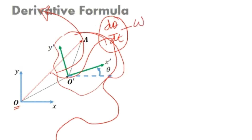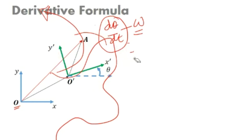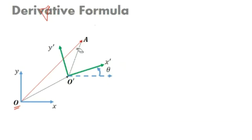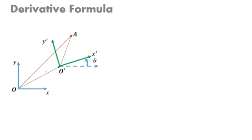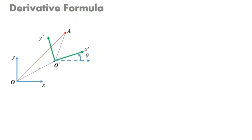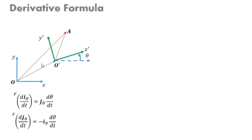If d theta by dt is present, omega is present. The displacement A is changing. If the body is not moving in a straight line, it will have both angular velocity and linear velocity. If any body moves in a curved path, it will have angular velocity, and it may also have angular acceleration if velocities are changing. If it is not in rectilinear motion, it will have both components of linear velocity and angular velocity. So we will be using these two expressions.